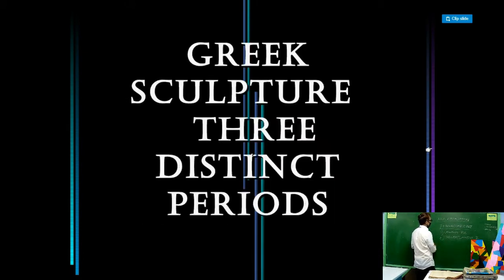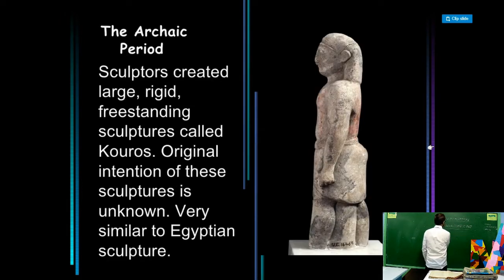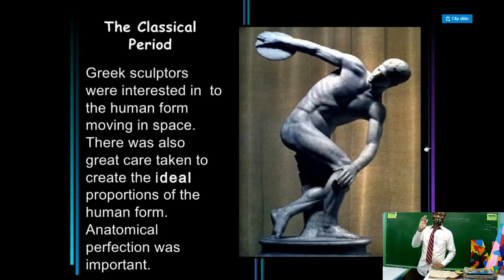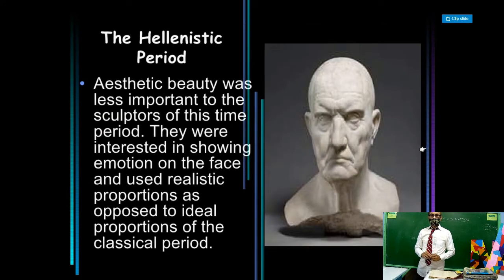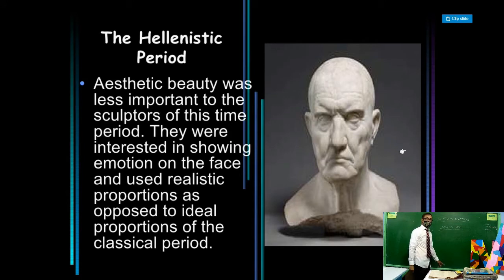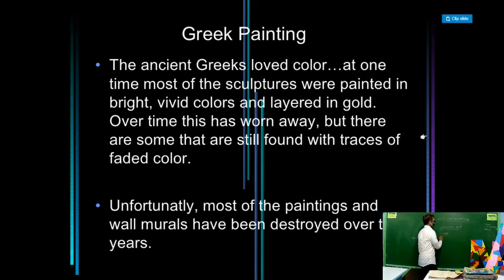Now let's talk about Greek sculpture. There are three distinct periods: the Archaic period, the Classical period, and the Hellenistic period — where Oriental and Western people mixed together in Greece and their art combined. That is why it is called the Hellenistic period.